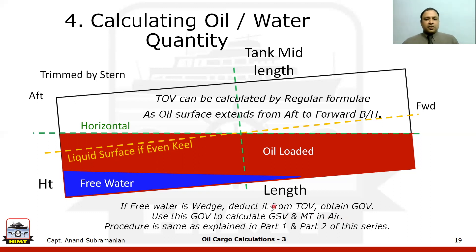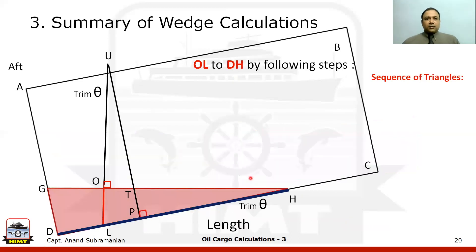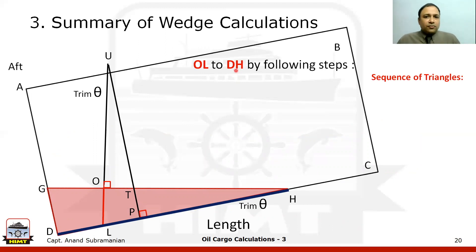As a summary, the story of the wedge calculation is to find out from OL to DH. To make things simpler, it helps to break it up into key pieces, because talking about four triangles — UOT, TPH, GDH — can become confusing.